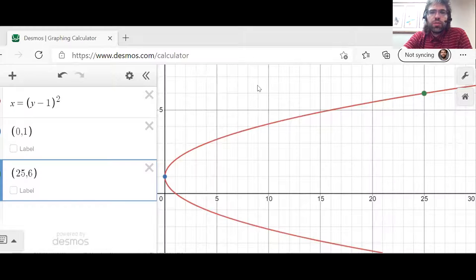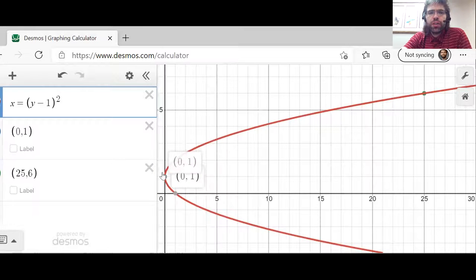So what's happening is that the curve starts at zero one. And then as time passes, we move along the curve in this direction.